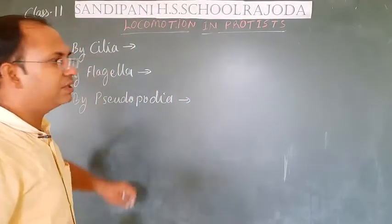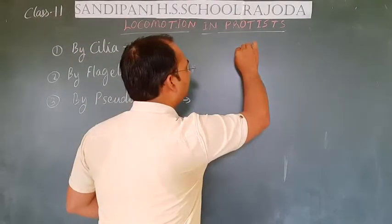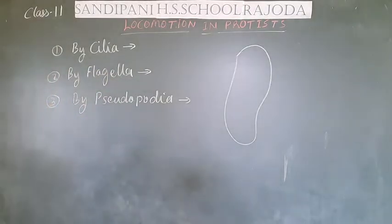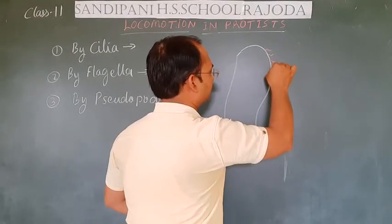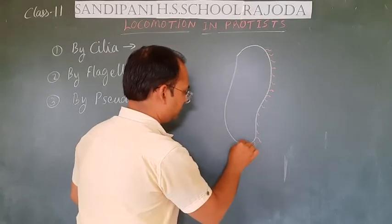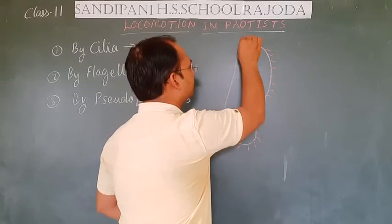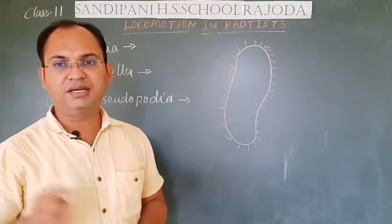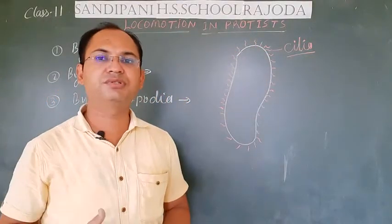First of all, let us see what cilia are and how they are present on the body of protists. The cilia are small hair-like structures present on the surface of the body of the Protista. They may be dense or they may be apart from each other, but the whole body of the Protista is covered by these hair-like structures, which are known as cilia.